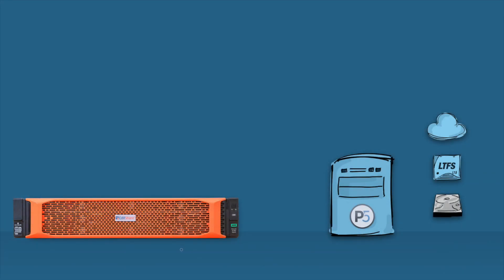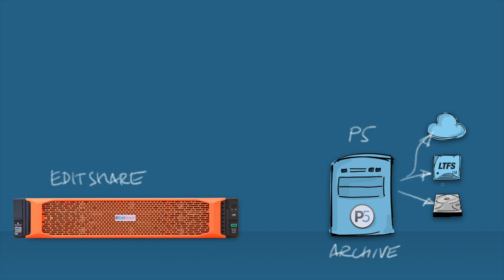Let's begin by explaining what I'm going to show you with a diagram. There is an EditShare server running as a VM, and there is a host running P5. P5 runs on Mac, Windows, Linux, FreeBSD, Synology, QNAP, and various other platforms. The P5 server has P5 installed and configured with an archive workflow using the P5 archive module. The archive workflow receives data from a source — in this case the EditShare machine — and sends it to cloud storage, LTFS tapes, LTO tapes, or disk-based storage.